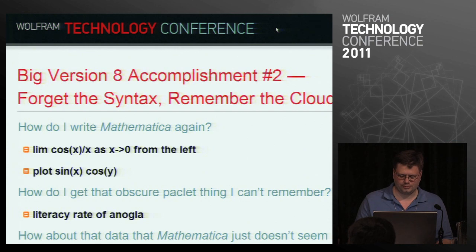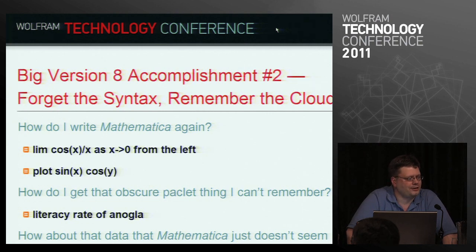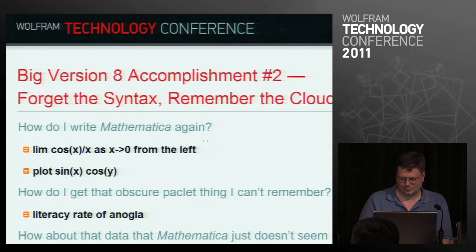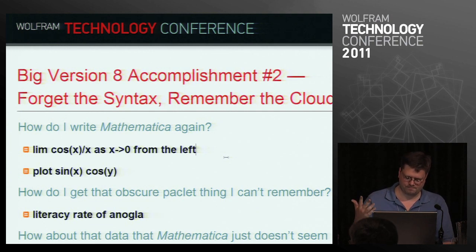Big version 8 accomplishment number two: forget the syntax, remember the cloud. This is Wolfram Alpha integration — we now have a way to write Mathematica code without writing Mathematica code. We now have a way to type in a plain English description of the code you want to use. You just type an equals sign and then type in whatever you want, and this works by going to Wolfram Alpha.